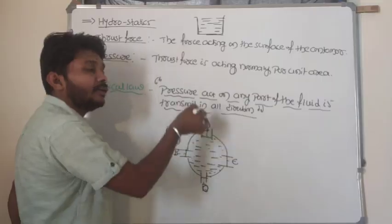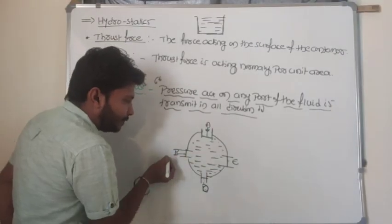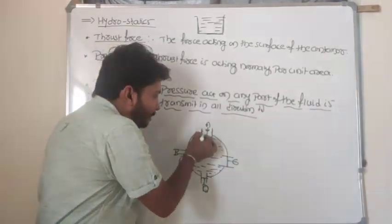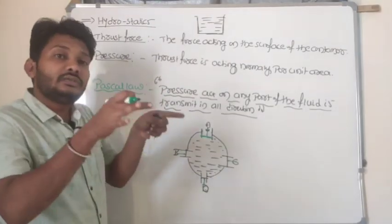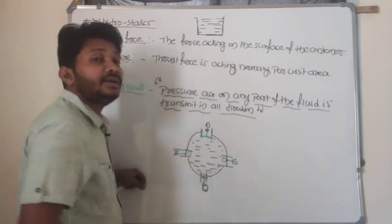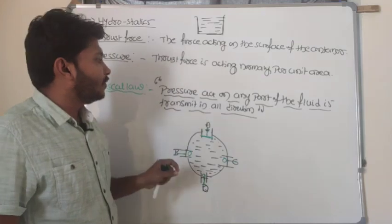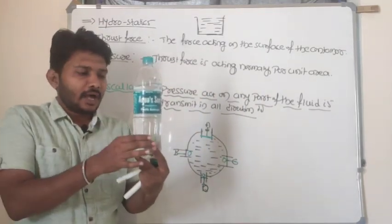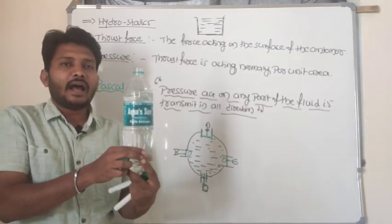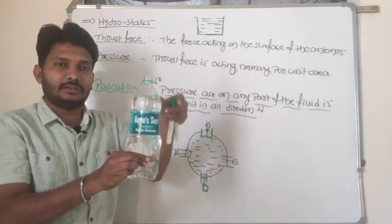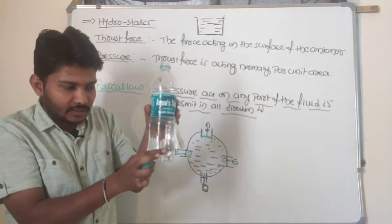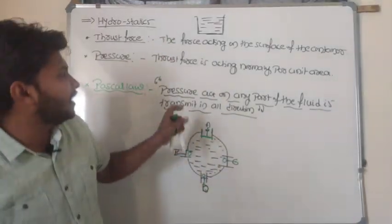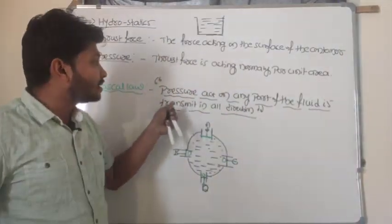The pressure applied at point A is distributed to pistons B, C, and D. This means pressure applied at any one part of the fluid is transmitted in all directions. As a general example, if I fill a container with water and apply pressure at the bottom side, this pressure distributes in all directions. This is what Pascal's law states: pressure at any part of the fluid is transmitted in all directions.